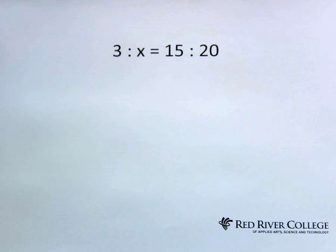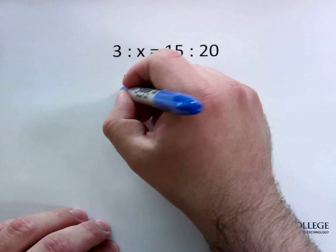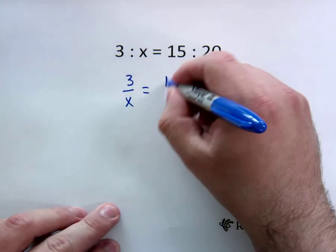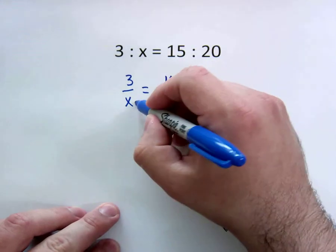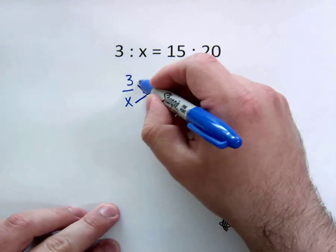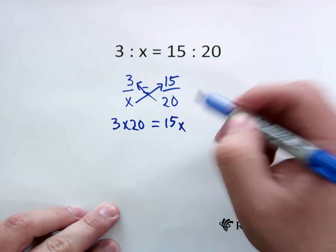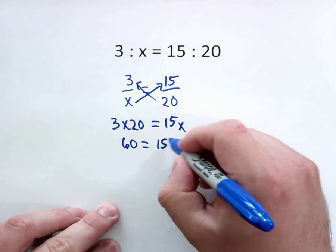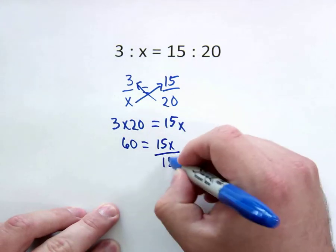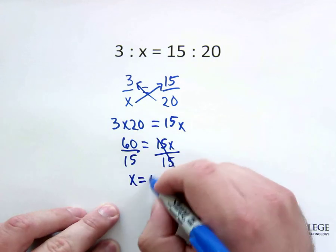So in this first one we've got 3 to x is equal to 15 to 20. What we do is start by making a fraction. So 3 over x is equal to 15 over 20. At this point we now cross multiply. So now we've got 3 times 20 is equal to 15x. 3 times 20 is 60 equals 15x. Divide by 15, that leaves us with just the x. x is equal to 4.